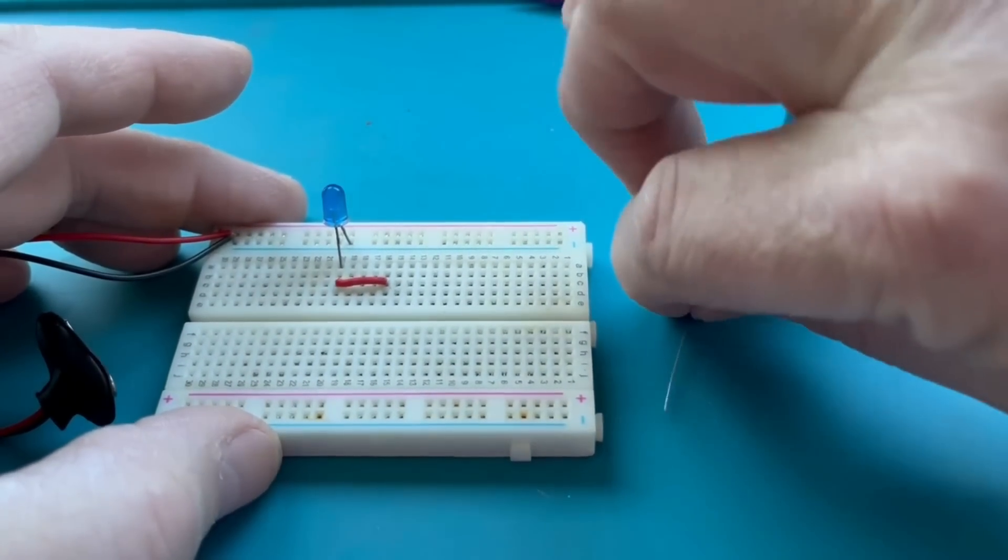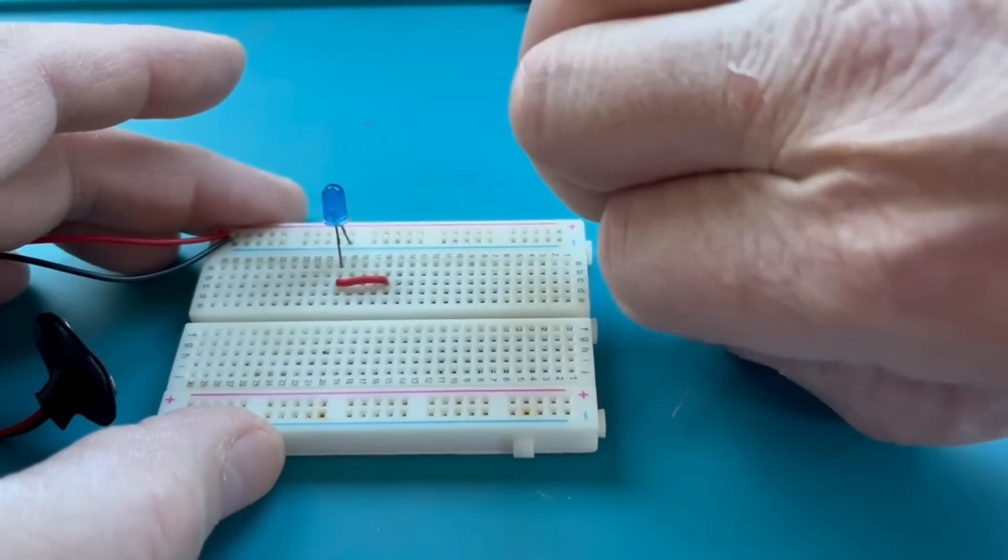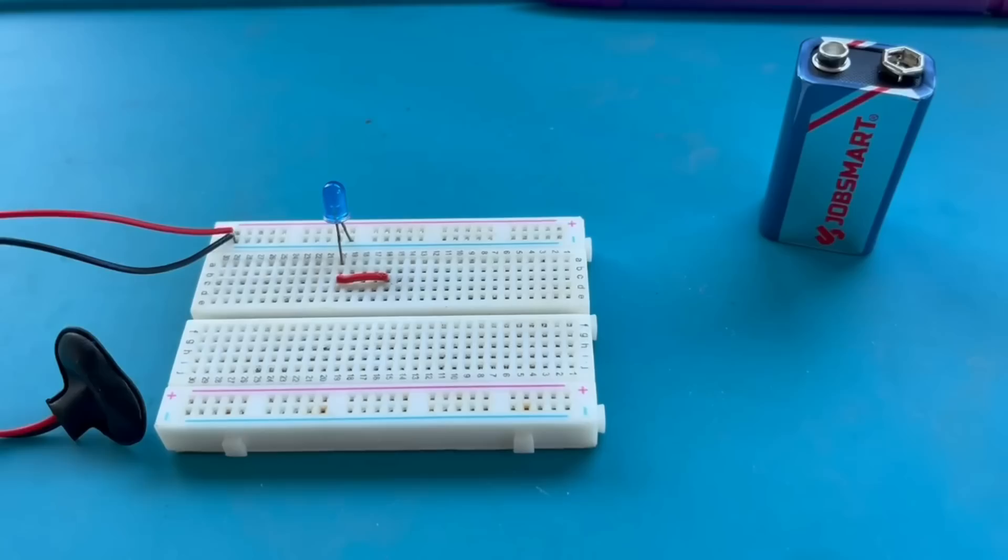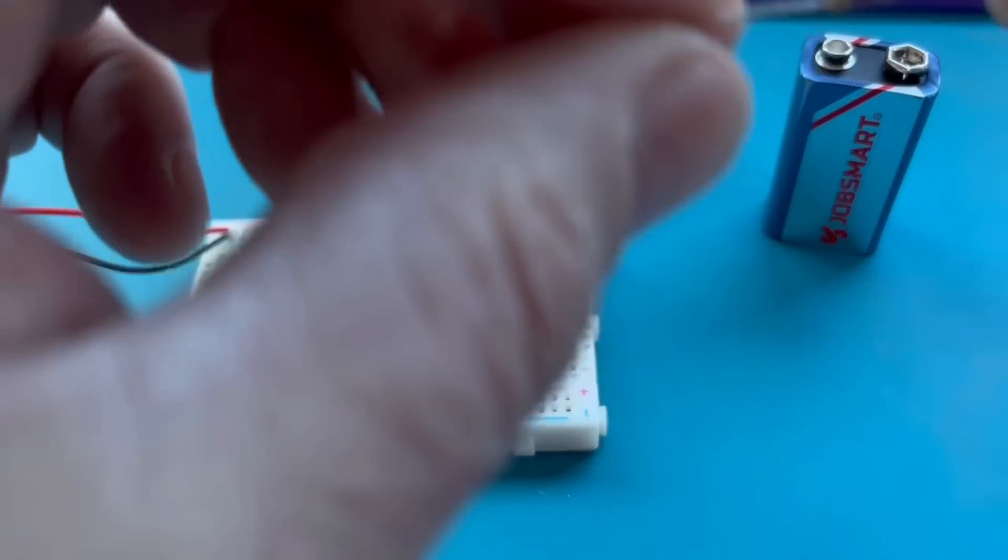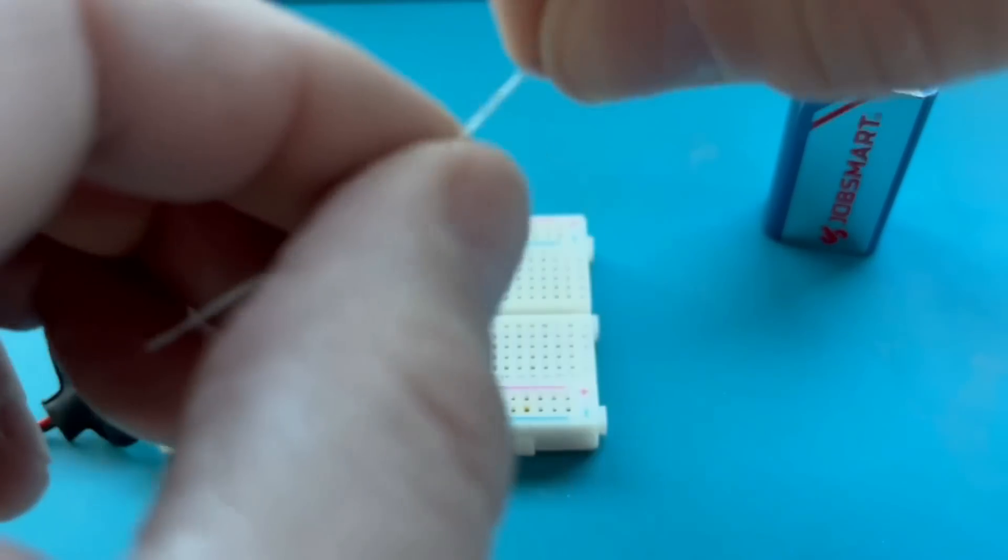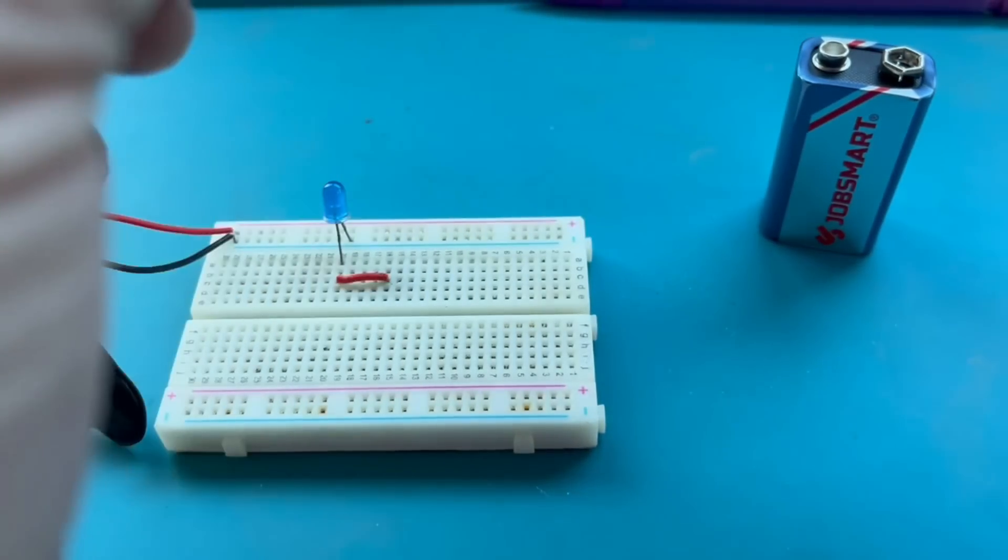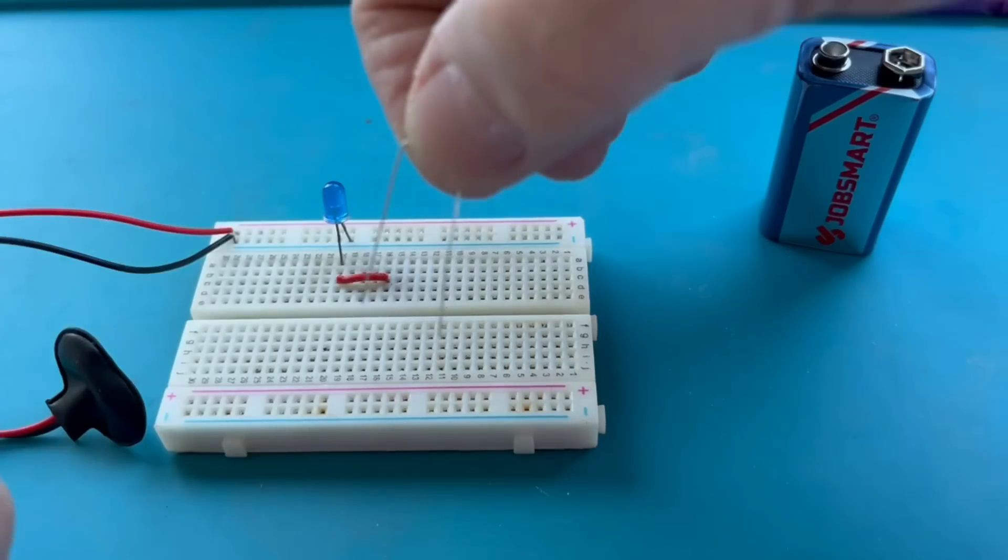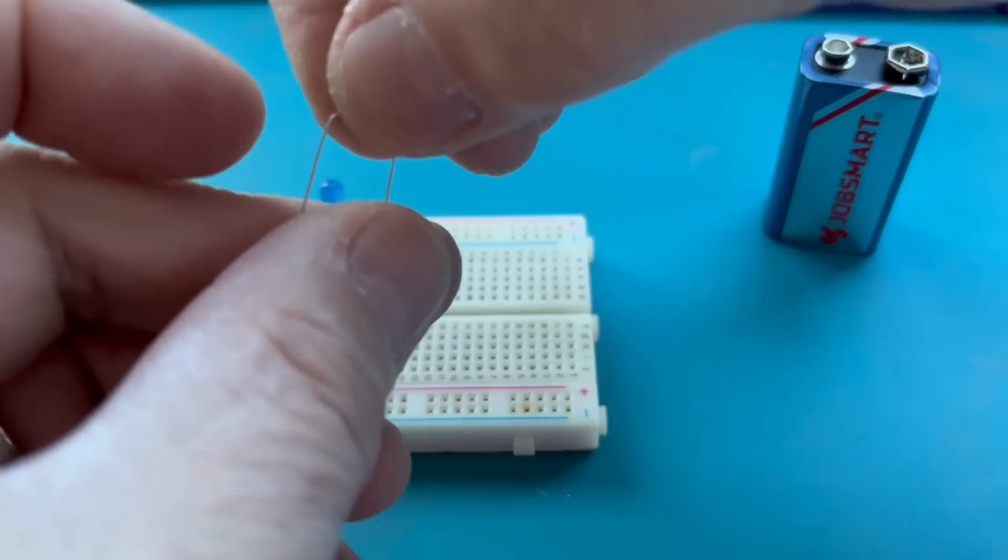So the next thing we'll do is put the resistor in, and I won't go into the discussion of how to determine the exact resistance amount necessary to protect your LED. In this case, we don't really care.